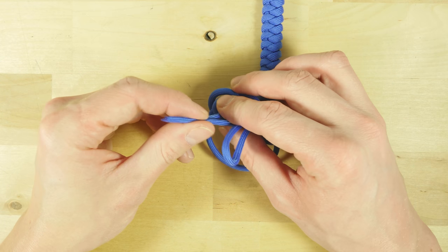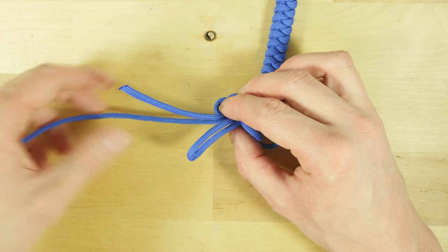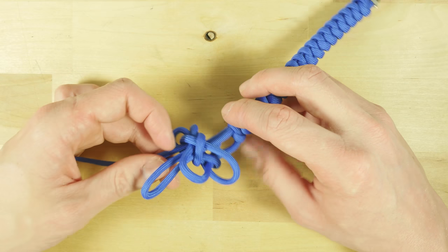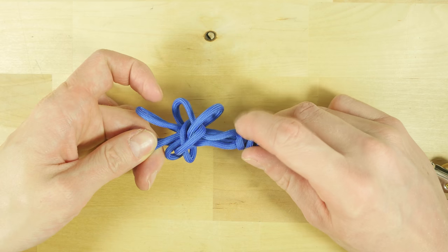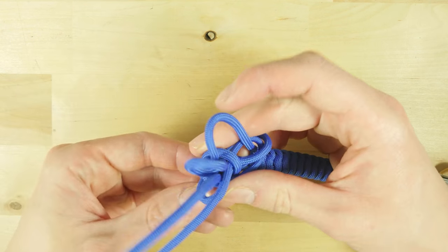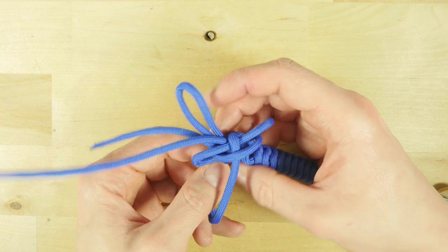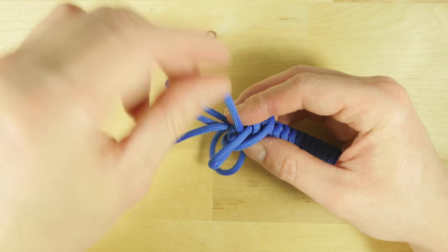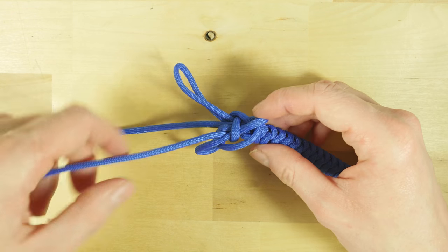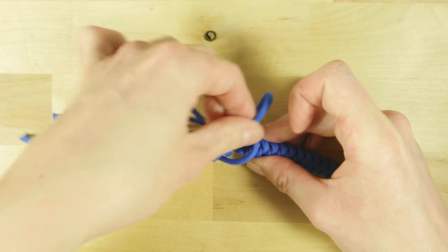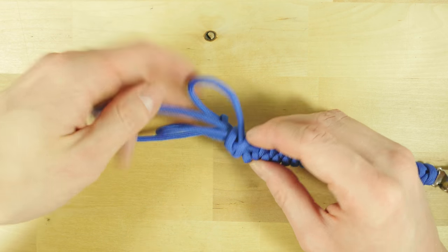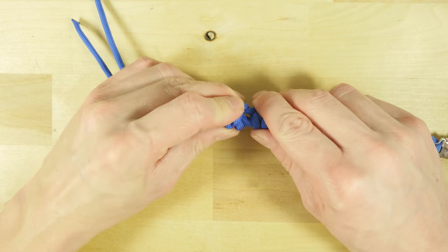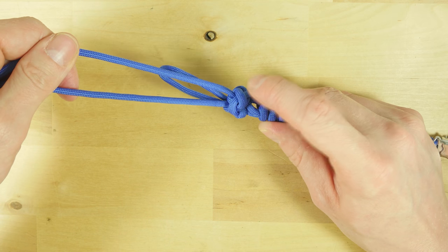Tighten up the lanyard knot. So first, pull a bit on the two working ends. Then remove the rest of the slack, starting at the strand coming out of the wall knot here. Then do the same with the other strand, and the lanyard knot is going to begin forming. Now you're going to need to re-tighten it several times to get a nice look.